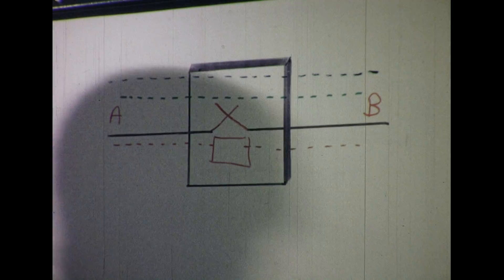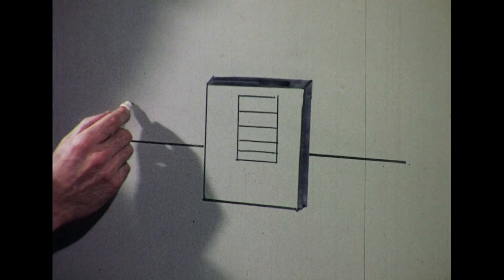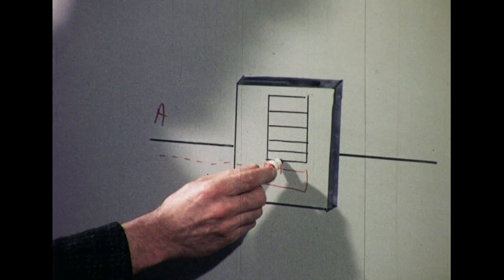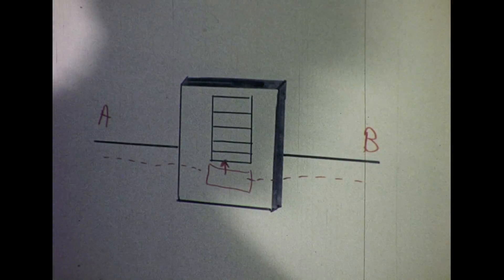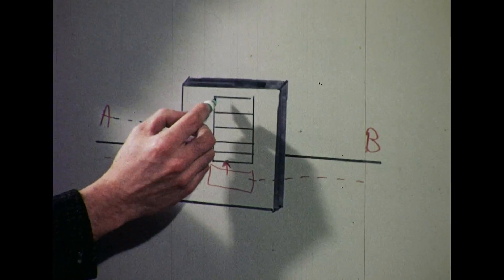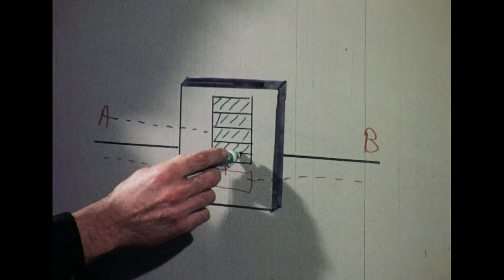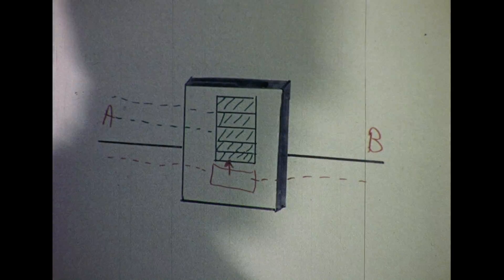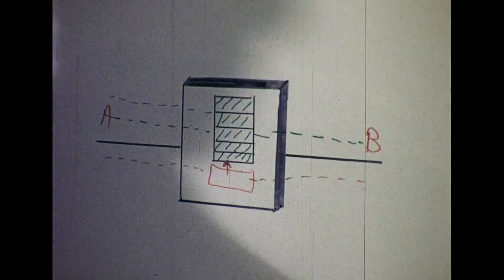The packet switching system includes storage in the network. Subscriber A calls the network to request some space for a communication with subscriber B. A sends information into the store at any speed, where it is accumulated until one packet of a thousand bits is collected. A is told when the packet is full, to stop him sending further information, and B is told that a packet is ready for him. He may now request the packet to be delivered to him, bit by bit, at any speed convenient to him.